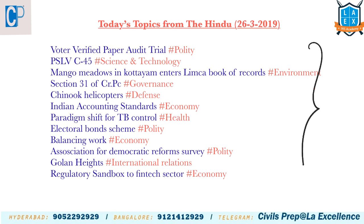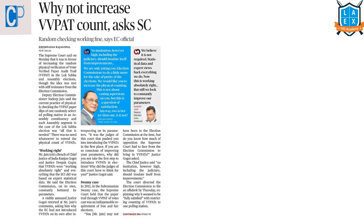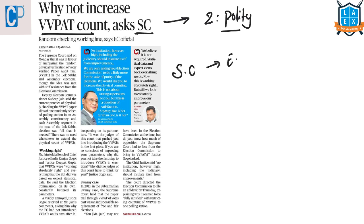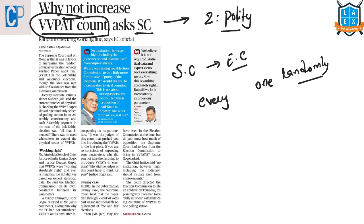These are all the topics we are going to cover in today's video. Our first article is 'Why not increase VVPAT count, asks the Supreme Court.' This article comes under GS Paper 2 under the topic of polity and the subtopic of elections. The context is the Supreme Court asking the Election Commission why not count all the Voter Verified Paper Audit Trail slips, since till now only one randomly selected booth in every constituency is chosen to count these VVPAT slips.